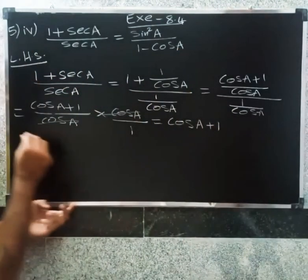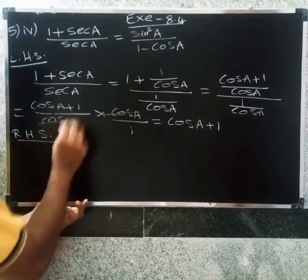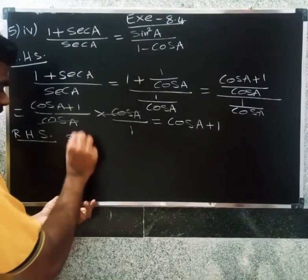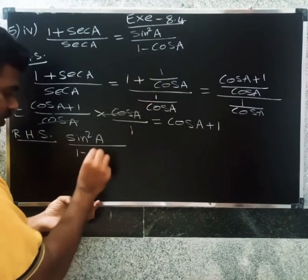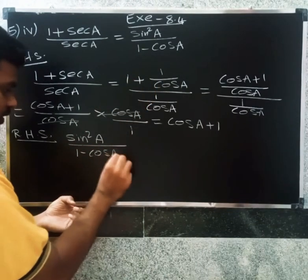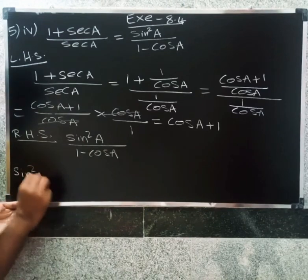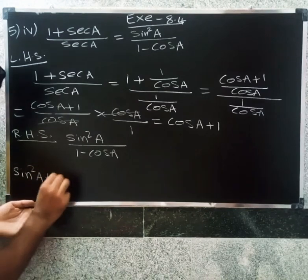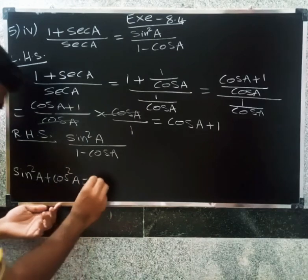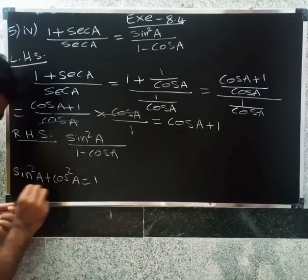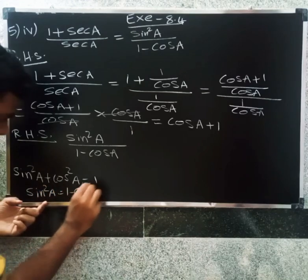Now moving to the RHS: sin²A divided by 1 minus cos A.